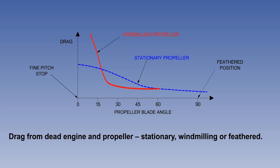A windmilling propeller will produce a large amount of drag, being driven by the relative airflow, generating both drag and torque. The propeller will also have the load of turning the dead engine, unless an automatic decoupling device is fitted.